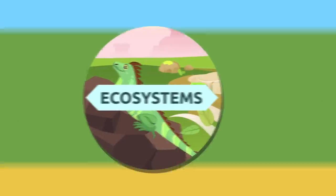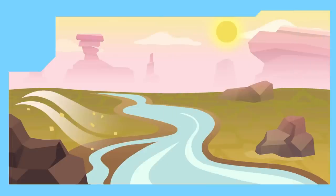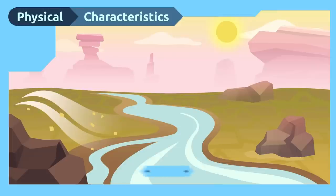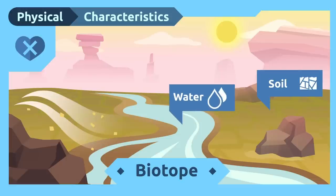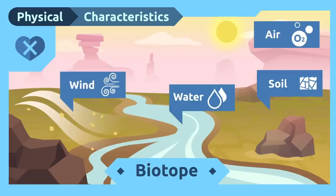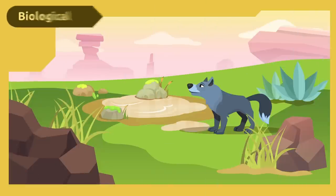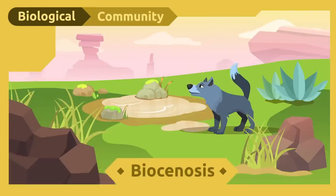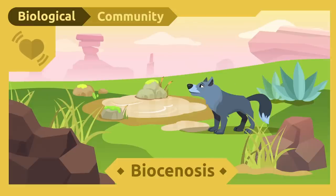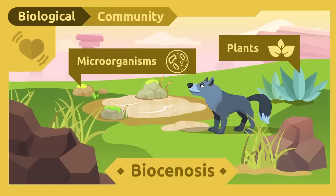Ecosystems consist of a biotope and a biocenosis. The physical characteristics of the surroundings are called a biotope — these include non-living elements like the soil, the water, the air, the wind, the light, or the temperature. The biological community that lives in those surroundings is called biocenosis — that is, the living beings in a physical area. Among the living beings that make up these communities, we can find microorganisms, plants, and animals.